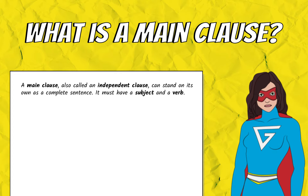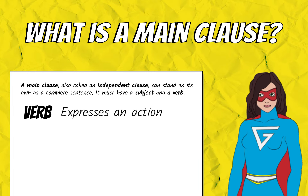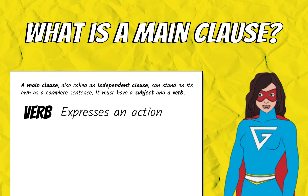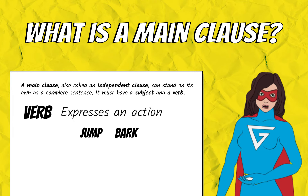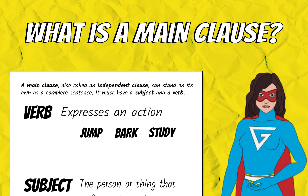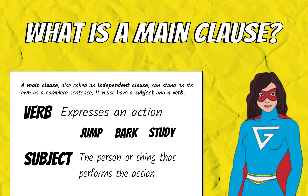In order to be a main clause, it has to have a subject and a verb. A verb expresses an action like jump, bark, or study, and the subject is the who or what that performs the action.